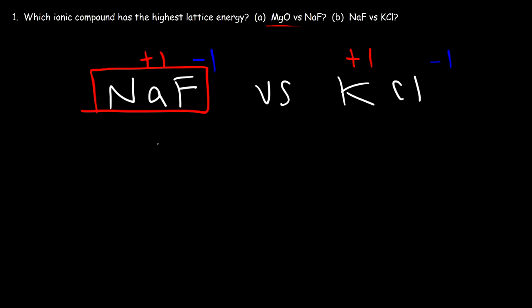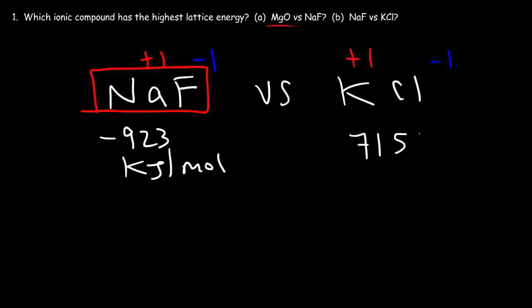Sodium fluoride has a lattice energy of -923 kJ/mol, and potassium chloride is less at -715 kJ/mol. As you can see, you need to look at two factors when determining which compound has a higher lattice energy: the charge and the ionic radius.